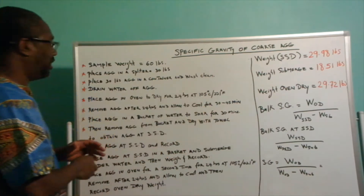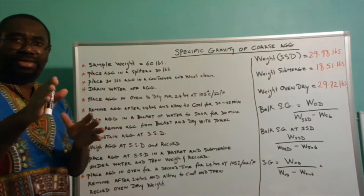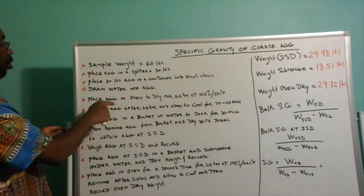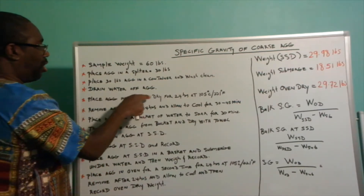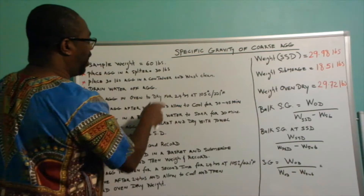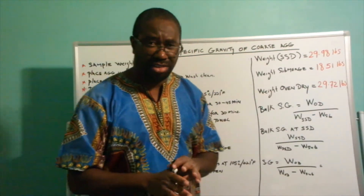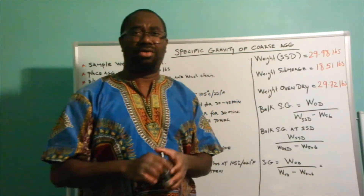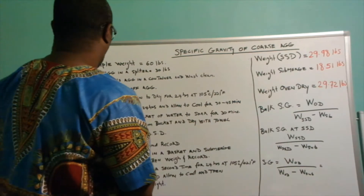After that is established, you drain the water from the coarse aggregate and then you place that aggregate in the oven to dry for 24 hours at 105 degrees Celsius or 221 degrees Fahrenheit.